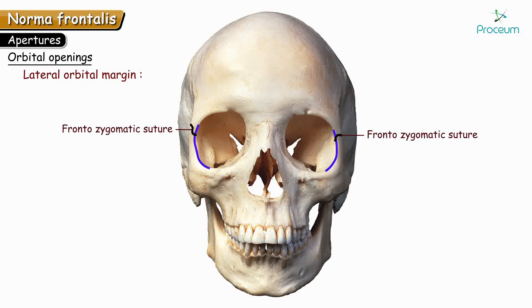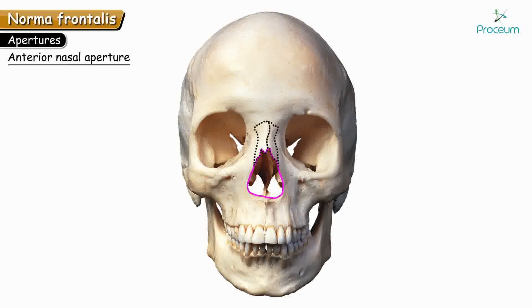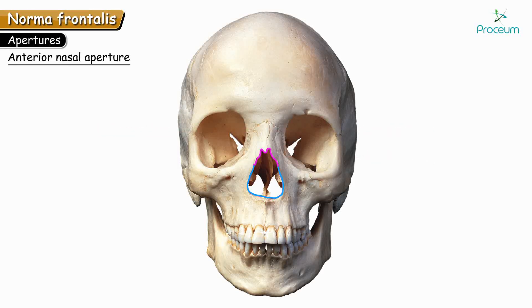Next we shall see the nasal aperture. The anterior nasal aperture is piriform in shape, narrow above and wider below. Superiorly, the narrow part is bounded by the two nasal bones. The right and left nasal bones are joined by a suture called the inter-nasal suture. The two nasal bones form the upper boundary of the nasal aperture, and the lateral and inferior boundaries are formed by the right and left maxillae.